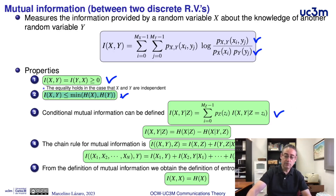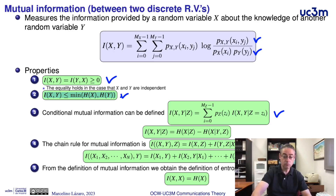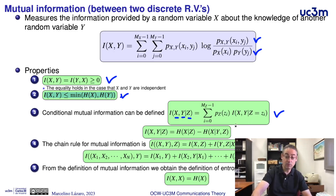It is also possible to define the conditional mutual information between two random variables given a third one, just by averaging the mutual information of the two first random variables — in this case x and y — given any event of the conditional random variable, in this case z.